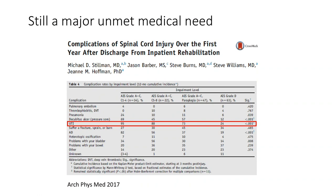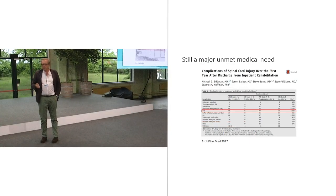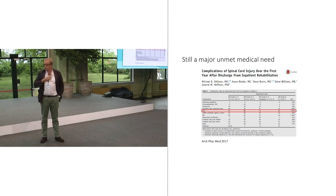Despite major progress in treatment — intermittent catheterization was the first advance, along with new drugs to treat neurogenic detrusor overactivity — it's still a major issue. Looking at a very recent publication from the SCI database in the US, only expert centers: those patients followed at one year show that for all patients, urinary tract infection is still the first complication at one year, with more than four UTIs.